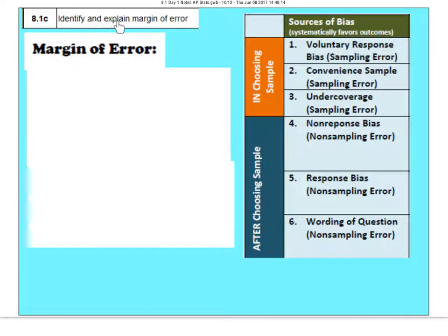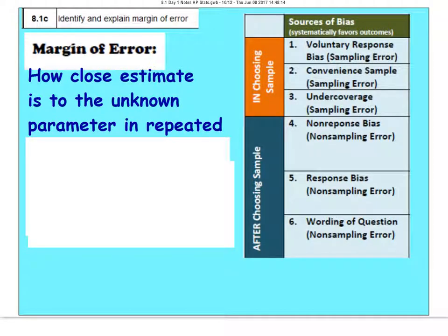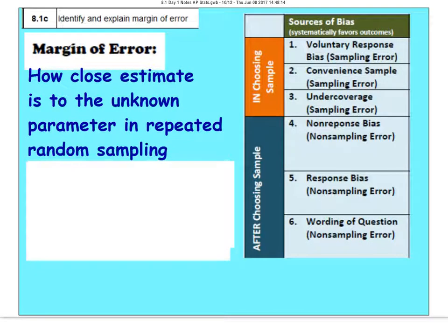In 8.1c, we're going to identify and explain margin of error. Remember, we said a confidence interval is taking your point estimate plus or minus the margin of error. So what is the margin of error? A good way of saying it, it's how close our estimate is to the unknown parameter in repeated random sampling.